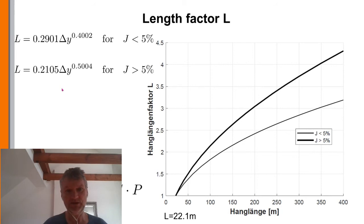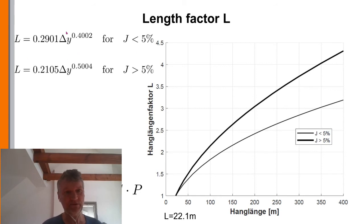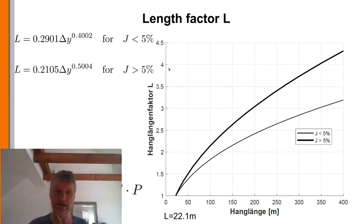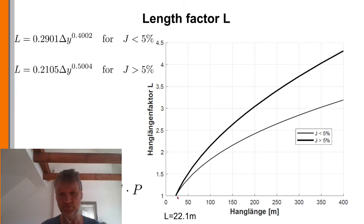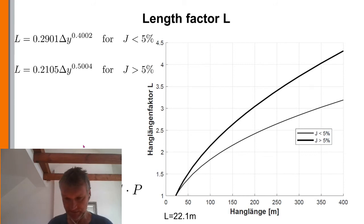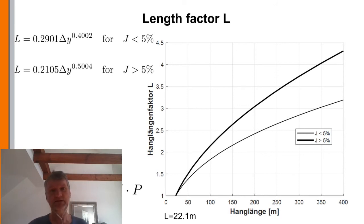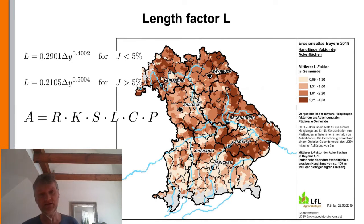When we have the field length — which I call delta y — we introduce it into the length factor formula. We distinguish between slopes lower and higher than 5%. The length factor equals one at a field length of 22 meters, and increases for longer fields since a longer field gives more soil erosion than a shorter one. The Bavaria map shows larger field lengths in some areas and smaller field lengths in others.